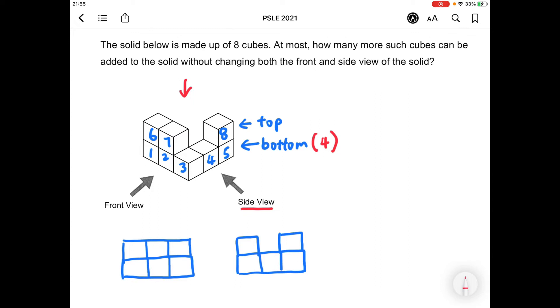As for the top layer we can have two more cubes behind cube 8, so one here another one there. The side view will still be the same because these two extra cubes are blocked by cube 8 and we can have one more cube above cube 3.